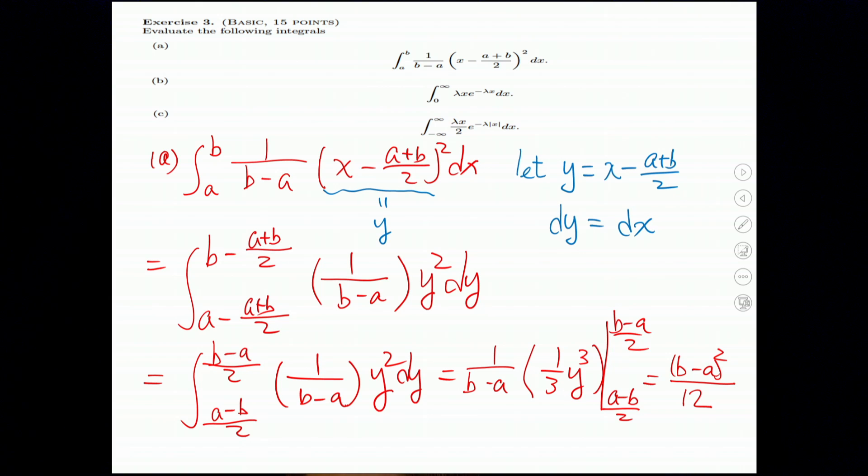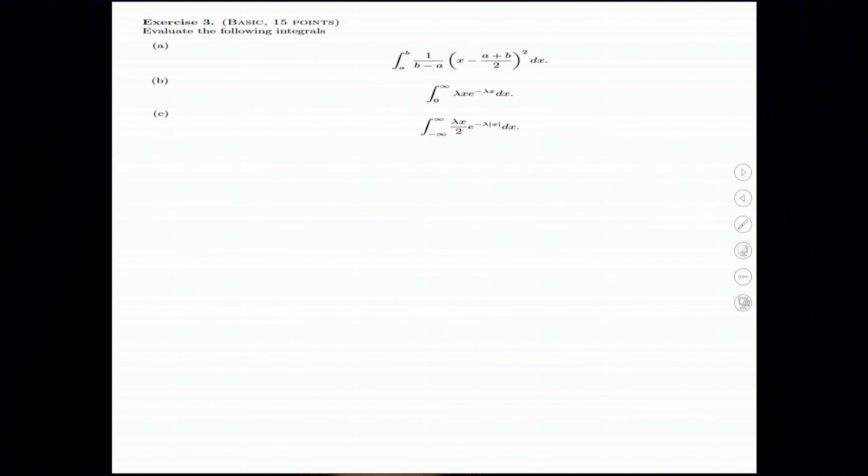Part B. I have a part B. I have an integration from 0 to infinity. And it is lambda times X times E to the minus lambda X dx. We don't want the lambda X and the exponential. So, we let Y equals lambda X, which is easier to calculate.